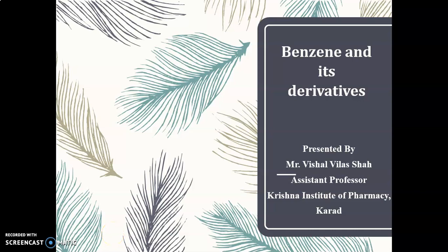Dear students, I am Mr. Vishal Shah, Assistant Professor at Krishna Institute of Pharmacy, Karad. Welcome you all to another session on this chapter: benzene and its derivatives. Today we are going to discuss the different rules that are used to describe whether a compound is aromatic or non-aromatic. We know the structure of benzene and benzene is considered as an aromatic compound, but what are the different rules and what are the other compounds which are also considered as aromatic?